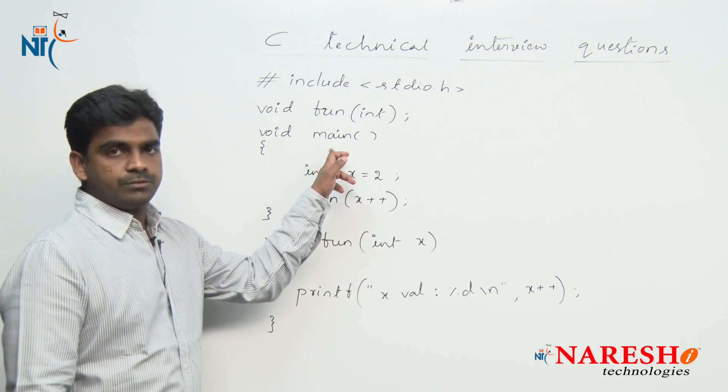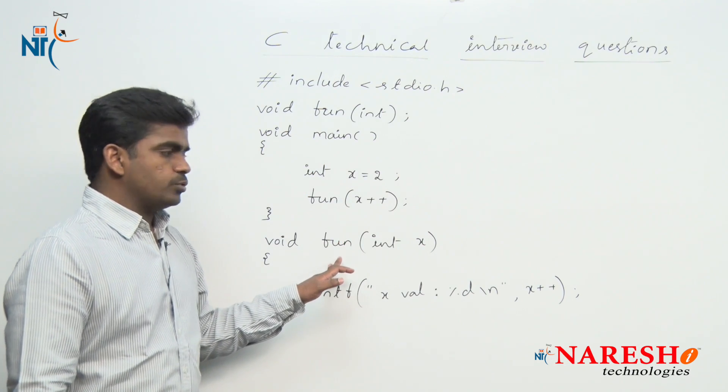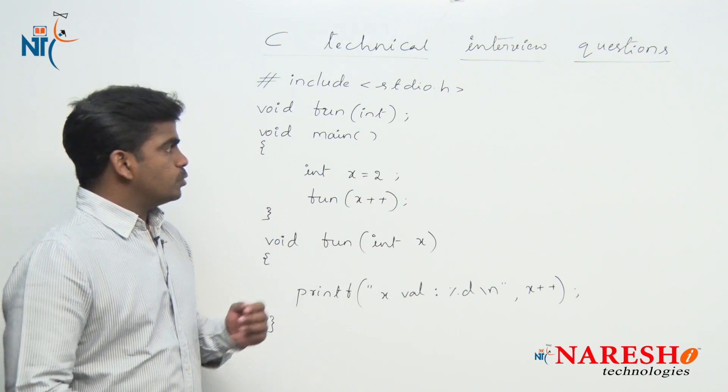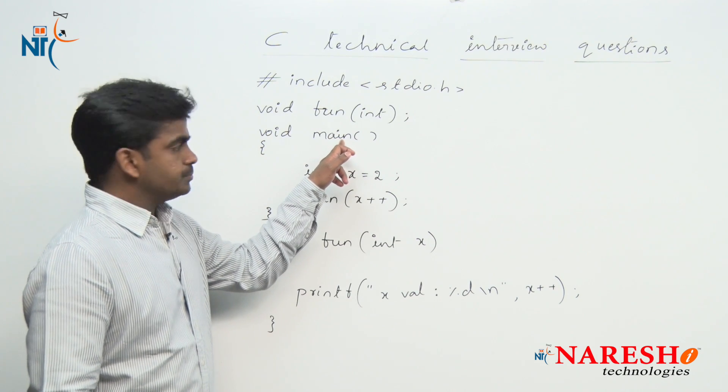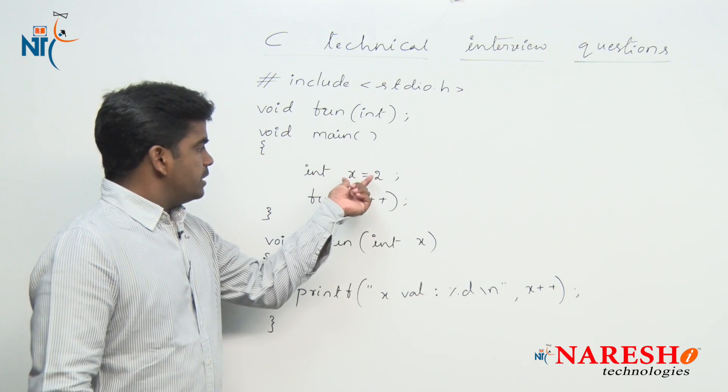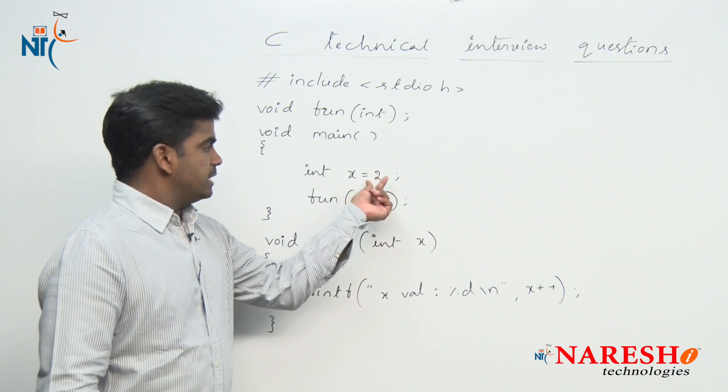Along with the main function here we are writing one more function. How this code executes: first execution starts from the main function inside, so here we are declaring one local variable and initializes with a value 2.